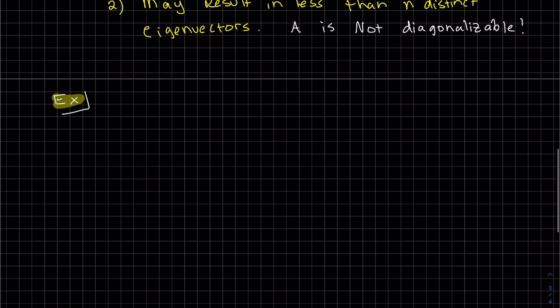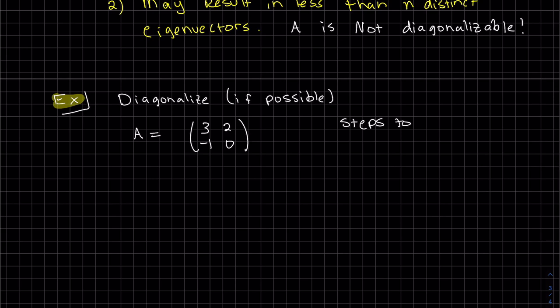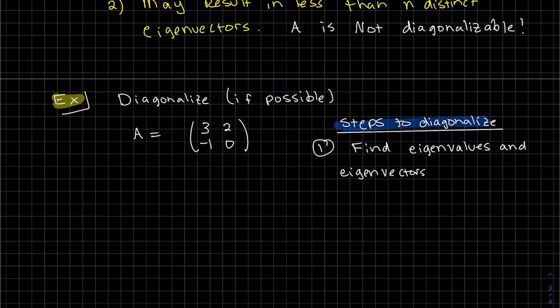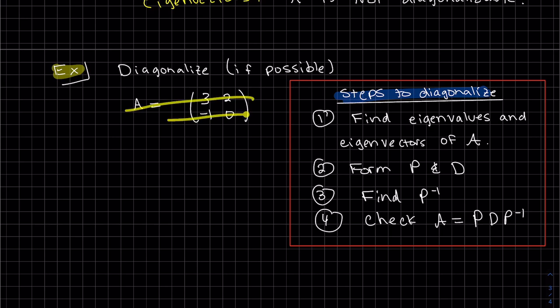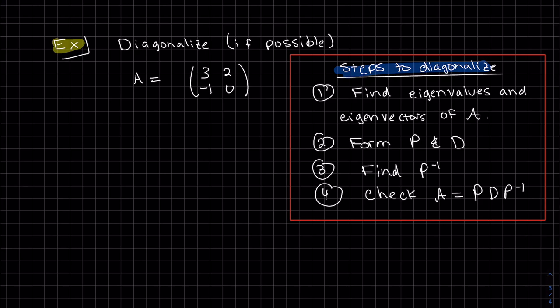Let's do an example. Okay, so we're going to try to diagonalize this matrix A. And here's the steps to diagonalize. So first, we need to find the eigenstuff, all the eigenvalues and the corresponding eigenvectors of A. And then we're going to form P and D. Remember, D is the diagonal of eigenvalues and P has the corresponding eigenvectors. Then we're going to find P inverse and then we're going to check that A can be diagonalized and it's easier to check when you're multiplying three matrices if we use the diagonal here in the middle because there's a lot more zeros to multiply.